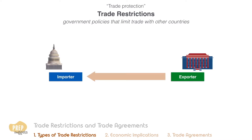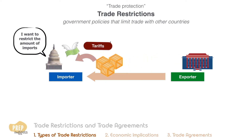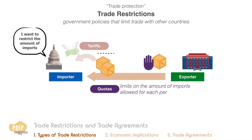Some countries that import goods want to restrict the amount of imports. This can be achieved by tariffs, which are taxes collected by the government on imported goods. The government can also impose quotas, which are limits on the amount of imports allowed for each period.